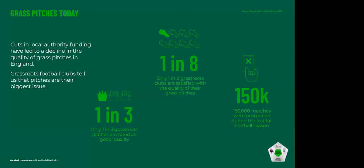In the last full season, 2018-19, the FA's survey found that only one in three grassroots pitches were rated as being of a good quality. Only one in eight clubs were satisfied with the quality of their grass pitches, and over 150,000 matches in that season were postponed due to waterlogging or the poor condition of the pitches. We know from all the feedback we're getting from the grassroots game that it's something we need to address.